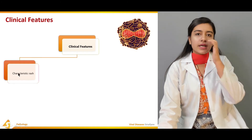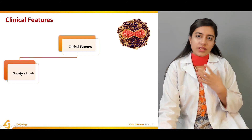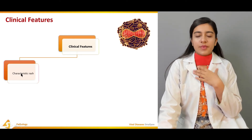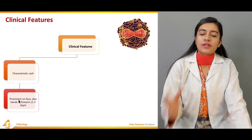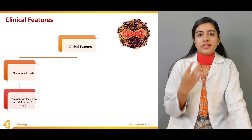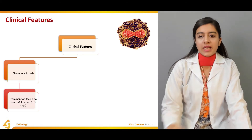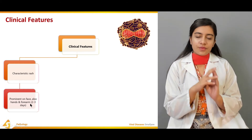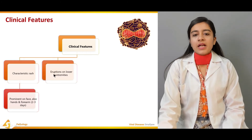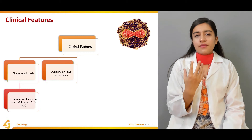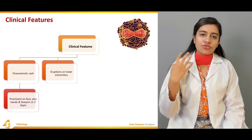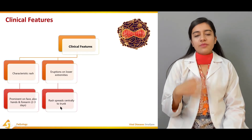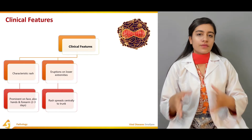The clinical features include a characteristic rash visible on the palate, skin, pharynx, and epiglottis. The rash is most prominent on the face, hands, and forearms, appearing two to three days after infection. From the face and forearms, the rash travels to the lower extremities and spreads centrally on the trunk, eventually covering the whole body.